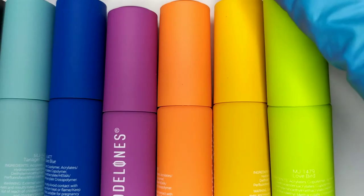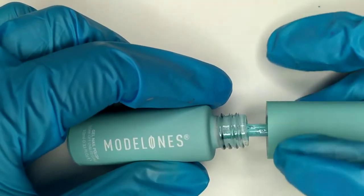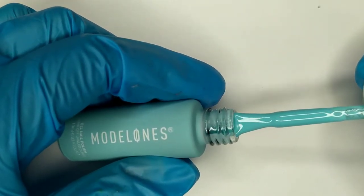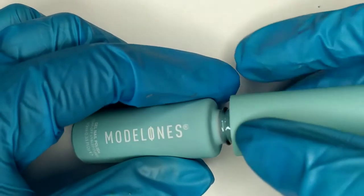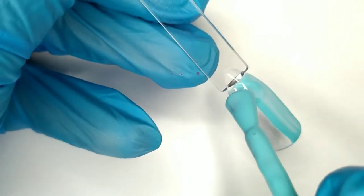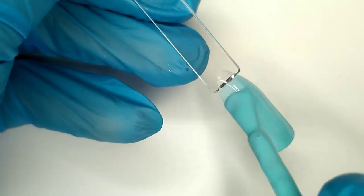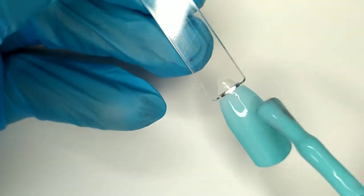So the first shade is Tanager Turquoise. This is how this one looks like. I actually haven't seen any color like this one before and I can say that Model Ones with Pantone really came up with good shades. All the colors that you're going to get in this set are pretty good. This is how this one looks like - it's kind of a light neonish sky blue shade and this one is going to give you full coverage in just one coat.